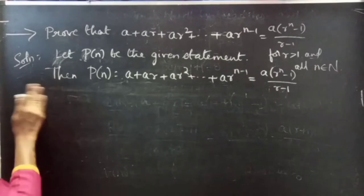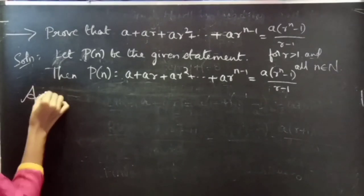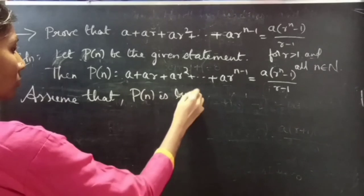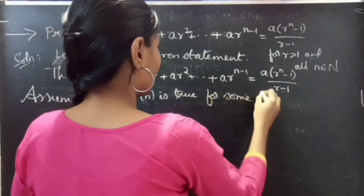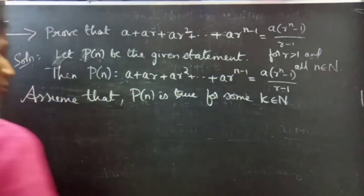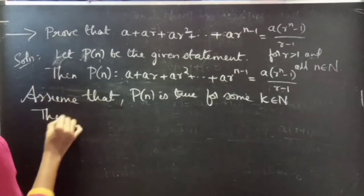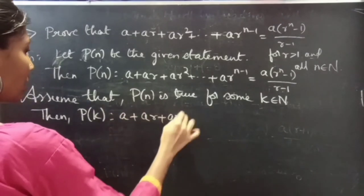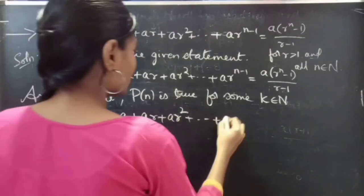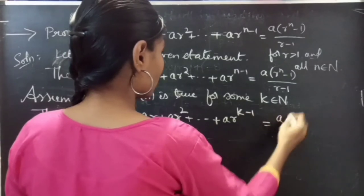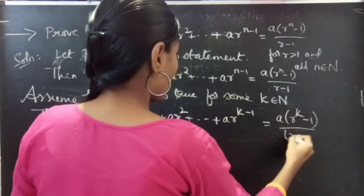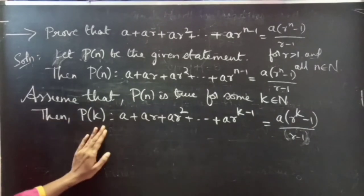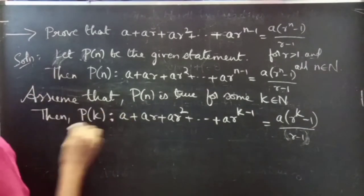Now let's assume that P of n is true for n equals k, where k belongs to natural numbers. Then P of k states that a plus ar plus ar squared plus ... plus a times r to the power k minus 1 equals a times (r to the power k minus 1) divided by (r minus 1). So we have assumed that P of k is true.